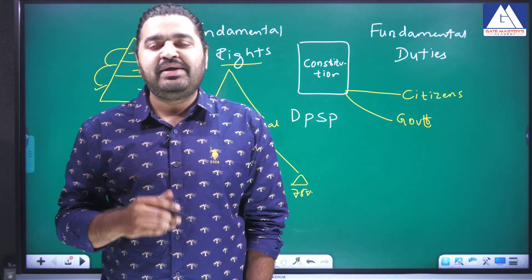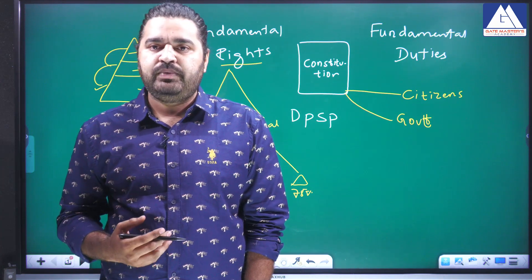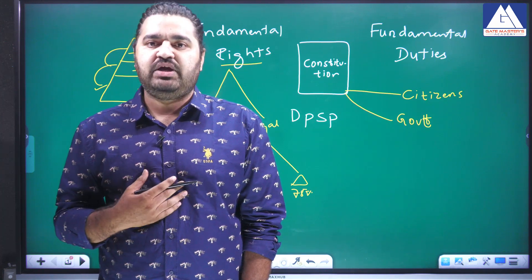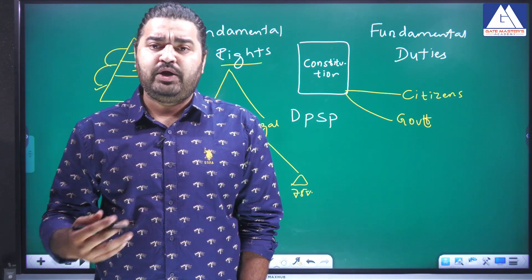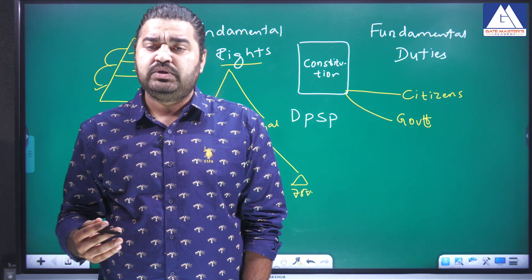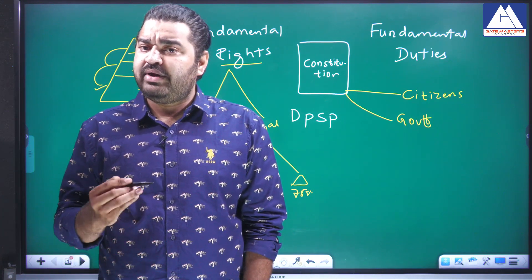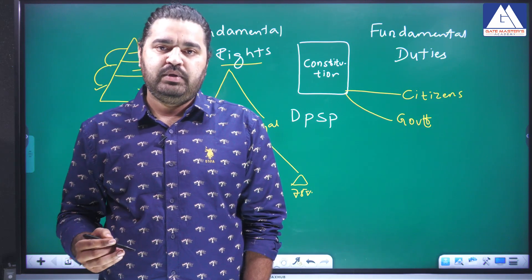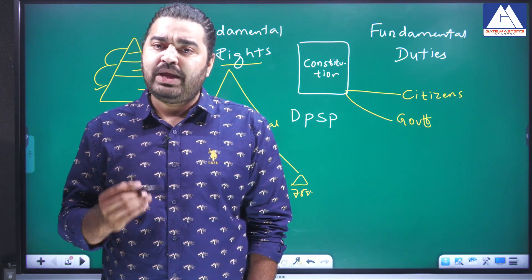So if a person's fundamental right is curtailed, the victim has the right to move to the Supreme Court or High Court directly. These fundamental rights are very important for human development and human welfare. Article 32 and Article 226 clearly state this — under Article 32 they can move to the Supreme Court, and under Article 226 they can move to the High Court.